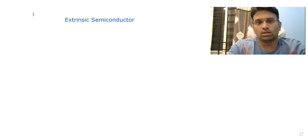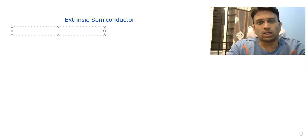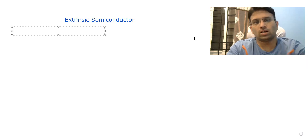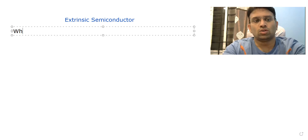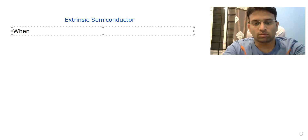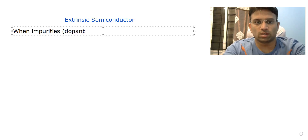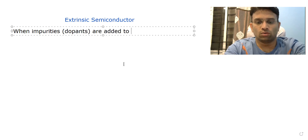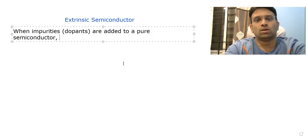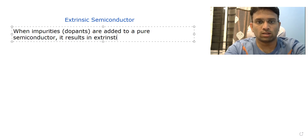When we add impurities to an intrinsic semiconductor, we form an extrinsic semiconductor. When impurities, which are also called dopants, are added to a pure semiconductor, it results in an extrinsic semiconductor.